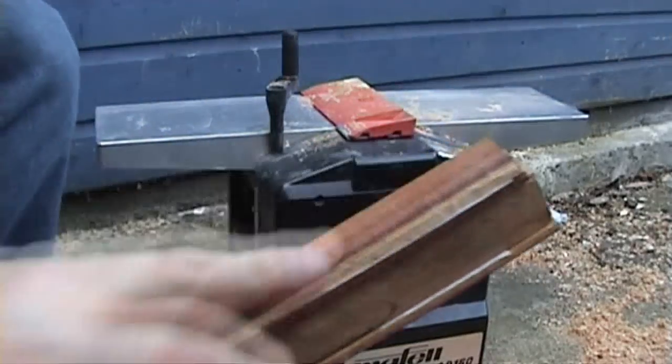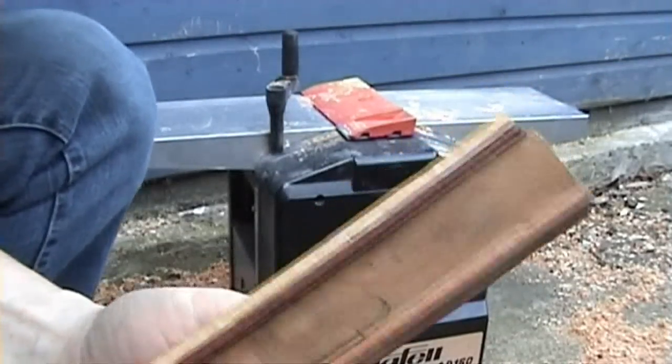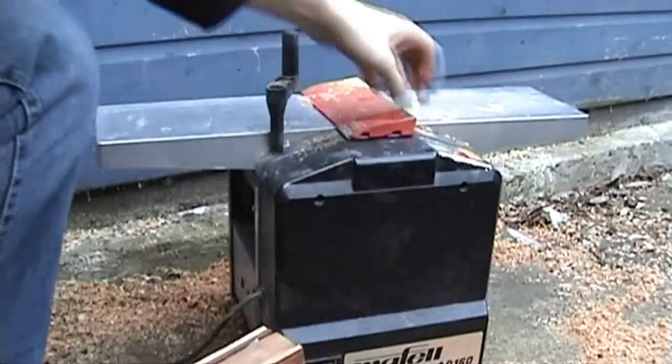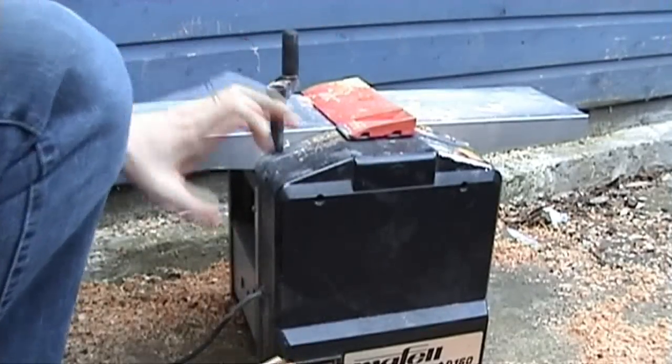We've just attached these fingerboards with double-sided tape to this blank. Now we're going to put them through our thicknesser, which is a Maffel AD160 that thicknesses up to 6 inches wide and 4 inches thick.